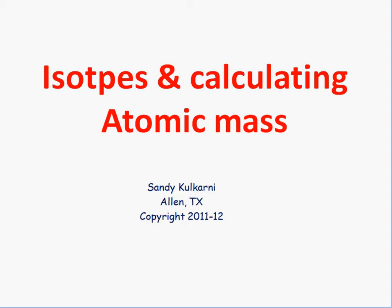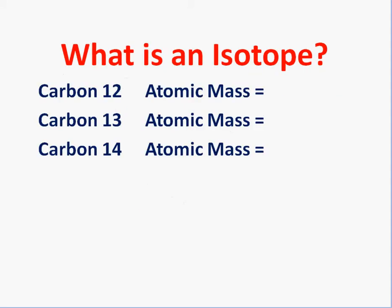Welcome to chemistry videos. Today we are going to talk about isotopes and how to calculate their atomic mass. What exactly is an isotope? Carbon has three different types of isotopes: carbon-12, carbon-13, and carbon-14.